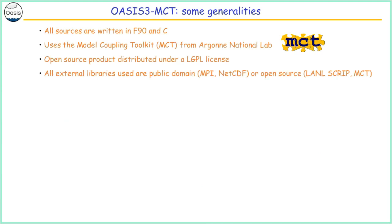You can see all the groups using OASIS 3 MCT. It's used in five of the seven European ESMs that participated in CMIP6.